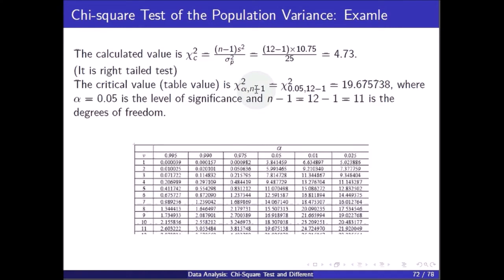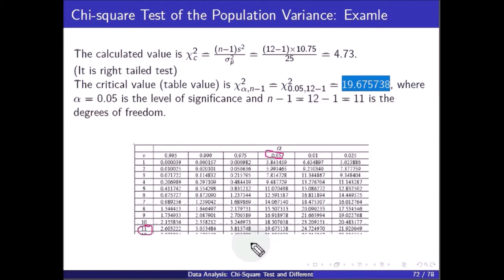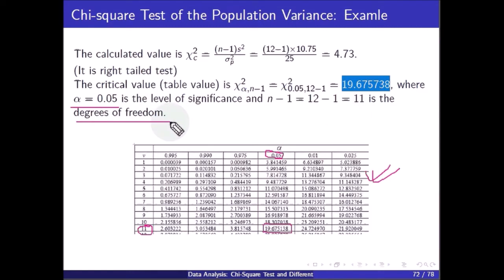The table value chi square(alpha, n-1) with alpha equal to 0.05 and n equal to 12, giving degrees of freedom equal to 11, is looked up from the chi-square table. Using alpha equal to 0.05 and degrees of freedom equal to 11, the table value is 19.675138.